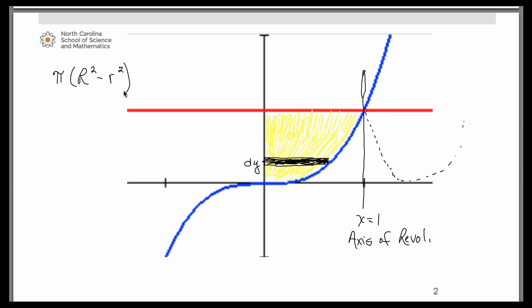Big R squared is going to be the distance from the axis of revolution to the far side of the rectangle. So that's going to be this part right here. So let's maybe come up with an expression for that first.